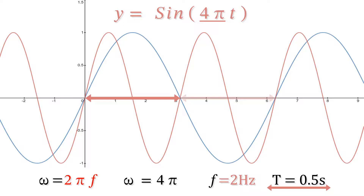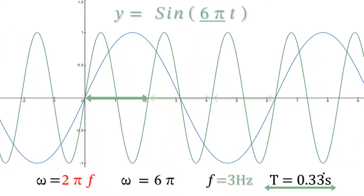Here we've doubled omega because the frequency of spin has doubled, so omega is 4 pi, meaning there are two cycles in one second compared to the blue waveform. So f is 2 hertz and the period T is 1 over 2, which is 0.5 seconds. Here omega is 6 pi, so the frequency is 6 pi divided by 2 pi, which is 3 hertz. So the period is 1 over 3, which is 0.3 recurring seconds.